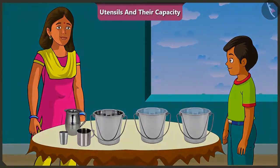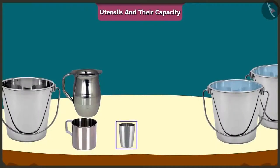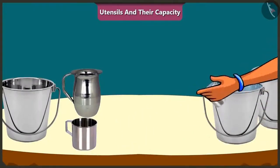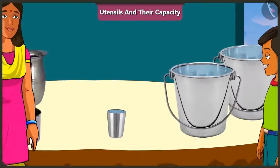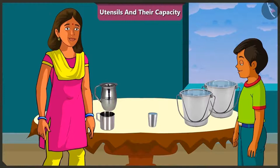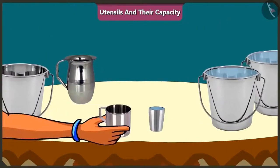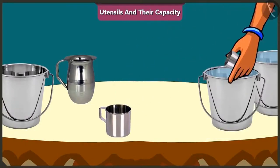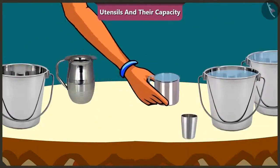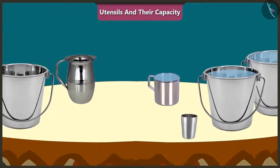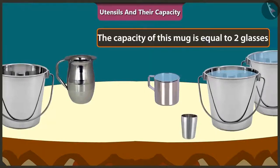How is that possible? First of all, I will fill this glass completely with water. Now, the amount of water in this glass is its capacity. With the help of this glass, I will fill this mug. One glass and one more, that is two glasses. We can fill this mug with two glasses of water. This shows that the capacity of this mug is equal to two glasses of water.